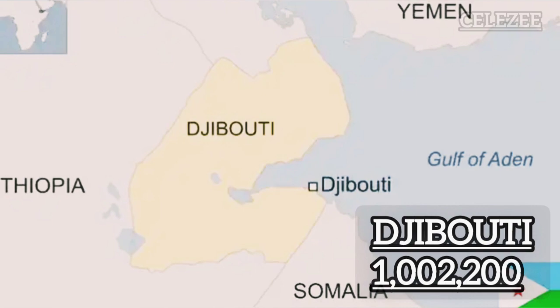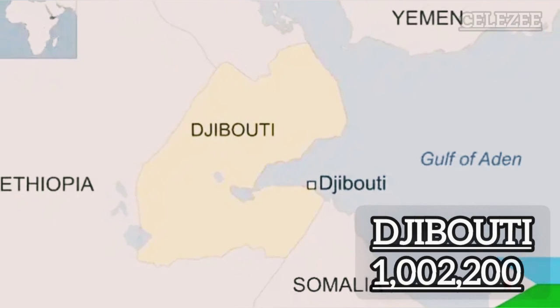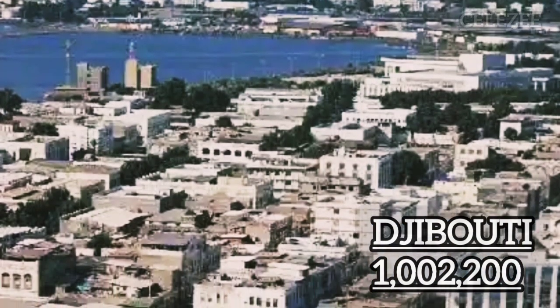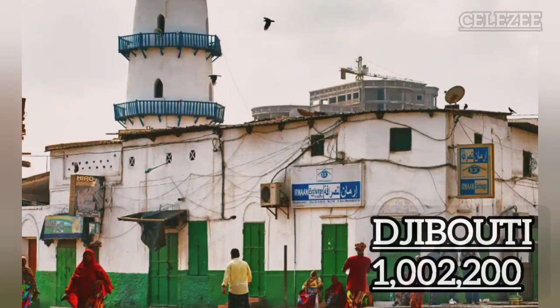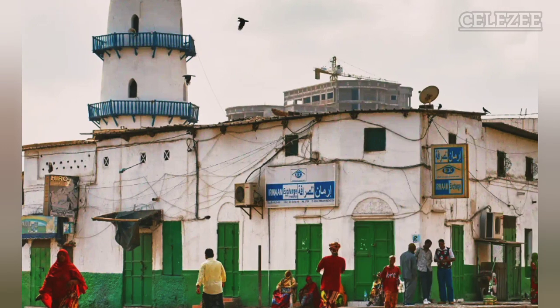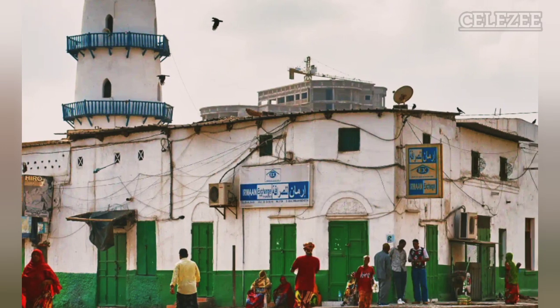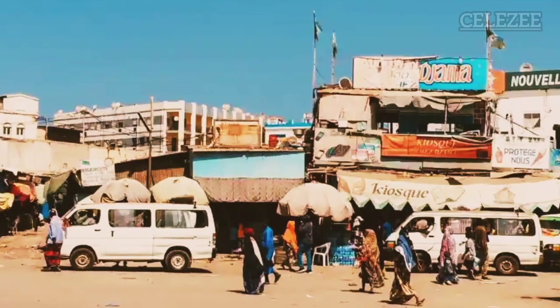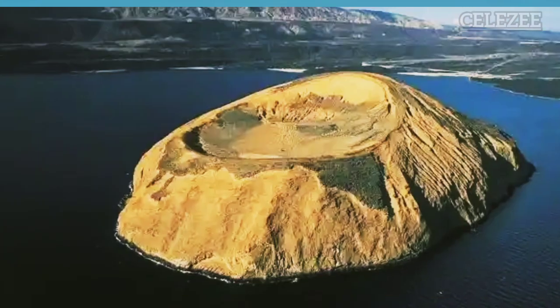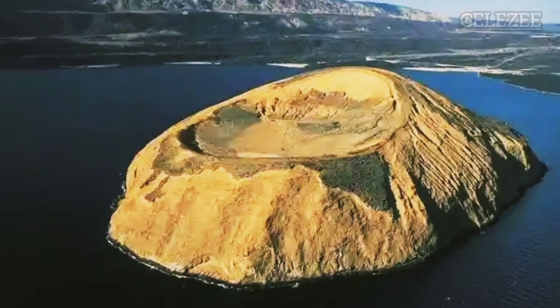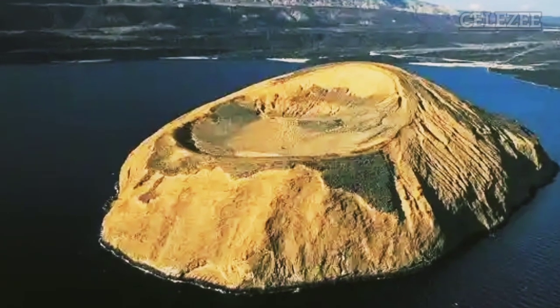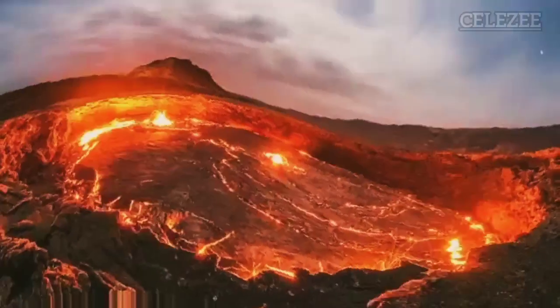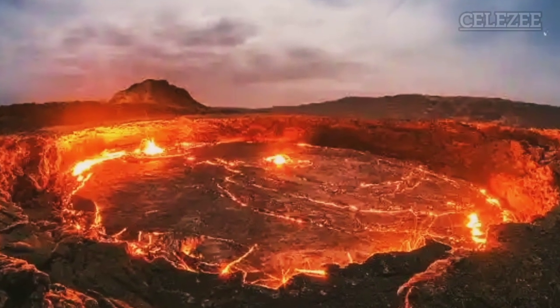Number 5: Djibouti. Djibouti, located at the Horn of Africa, is the smallest country in mainland Africa in terms of population, which stands at 1,220,000. It is characterized by its extremely salty bodies of water and a series of volcanic mountains.